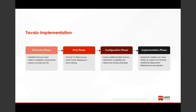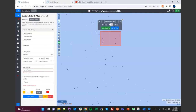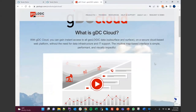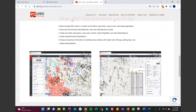For a Tavaio implementation, we first do a discovery phase where we establish a test use case and gather installation requirements. Then we do a pilot phase where we connect to one or two different data sources and train users on using Tavaio. We also do a configuration phase where we scope additional data sources, determine timing constraints, and establish scalability and cost. Finally, we implement and allow users to run the enterprise software themselves. For further information, you can email Tavaio at geologic.com or call the numbers listed. You can also search for Tavaio or GDC Cloud online to find more information, and anything you see there is part of the Tavaio system that we stand up behind your firewall and load your data into.